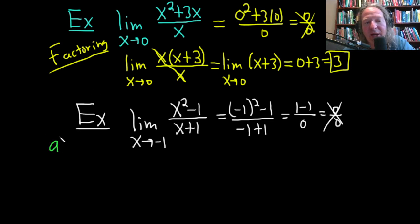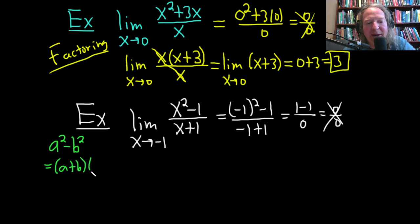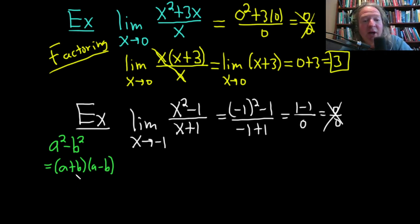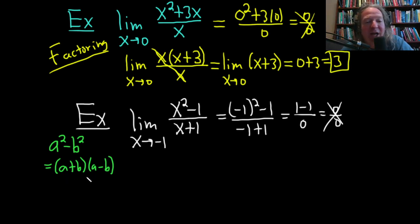Recall the difference of squares formula: a squared minus b squared equals (a + b)(a − b). Some people memorize it as (a − b)(a + b) — multiplication is commutative, so either order works.